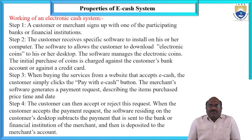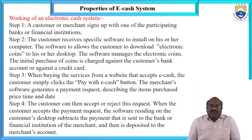The properties of the e-cash systems — how does an electronic cash system work? There are different types of properties. Step number one: a customer or merchant signs up with a participating bank or financial institution. It is very important to connect to financial institutions or participating banks. Sign-up is required before any operation.